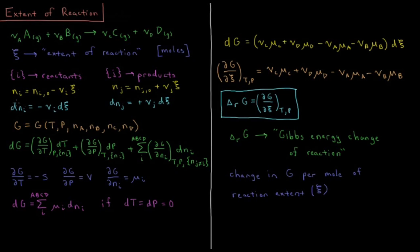The change in the number of moles of a reactant is dNi = −νi dξ, so as the reaction proceeds we consume our reactants. The change in the number of moles of a product is equal to its positive stoichiometric coefficient times the change in the extent of the reaction.